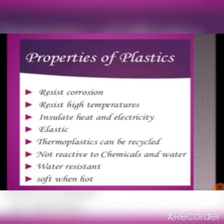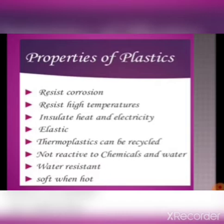So let us see what are the characteristics of plastics. Plastics are resistant to corrosion. Plastics do not get rusting as iron and steel or other metals usually get rust when exposed to air or water. But plastics are materials which do not get corrosion.